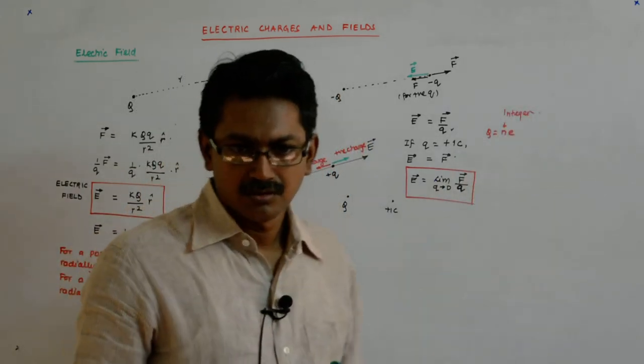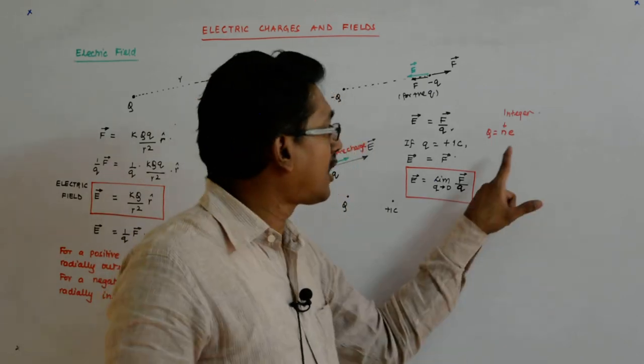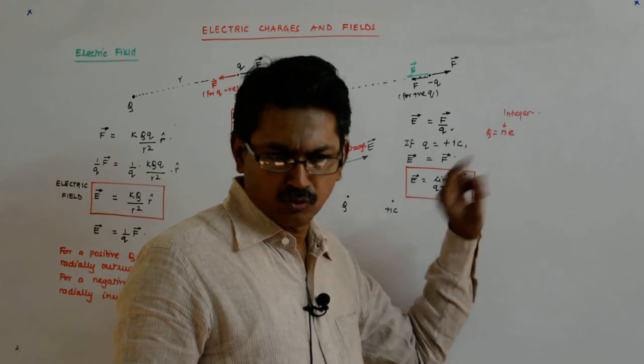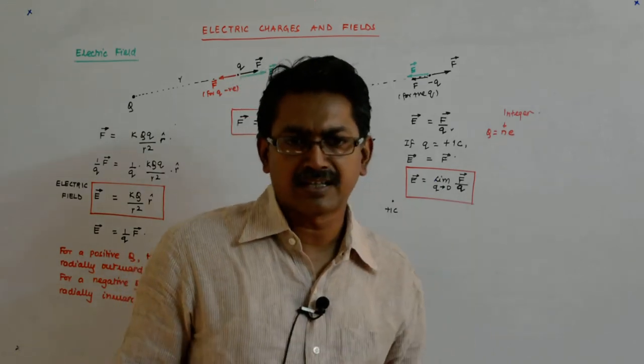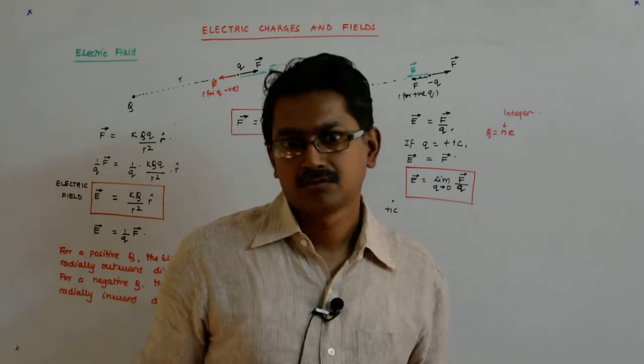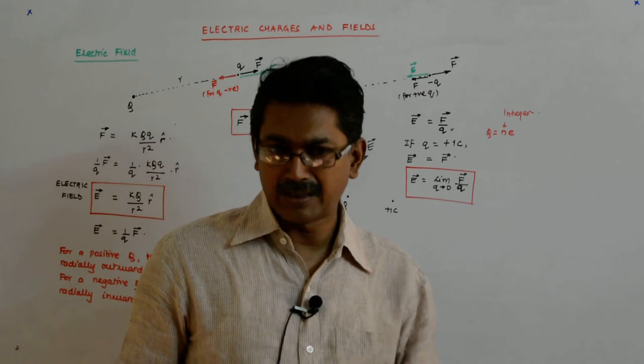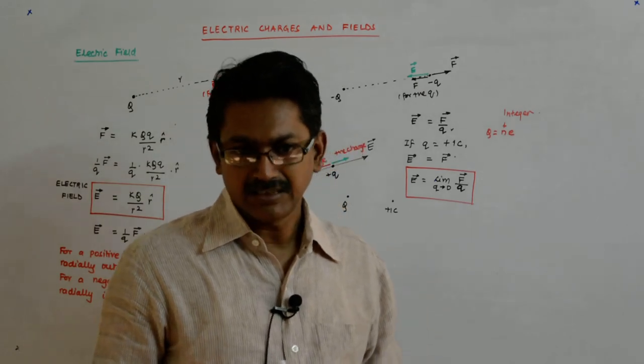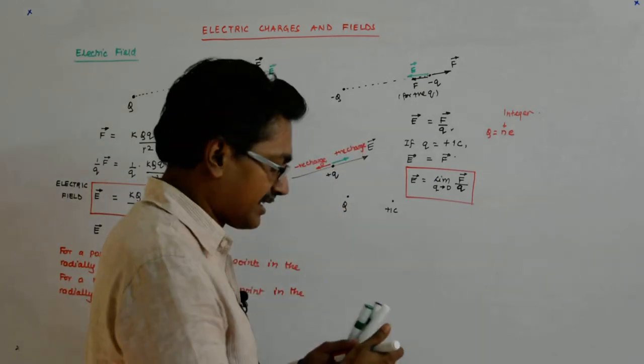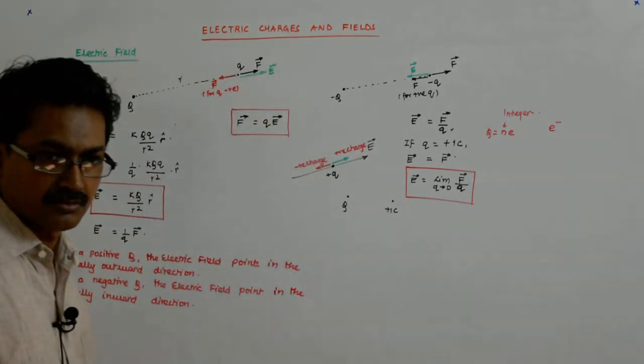No. This is not electron. That's why I said it is only 1.6 times 10 to the power minus 19, not minus or plus. e is not an electron. It is a basic charge, the fundamental charge. e stands for fundamental charge. Why there is a lot of confusion? Because this represents electron. Understand?